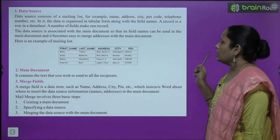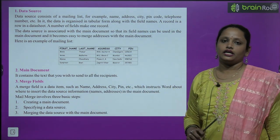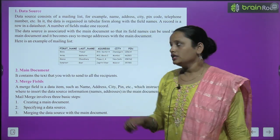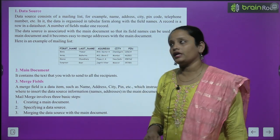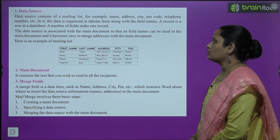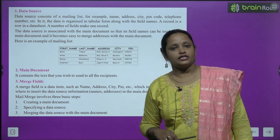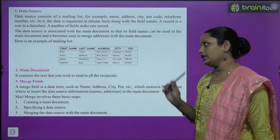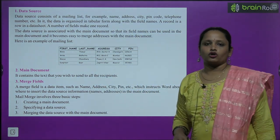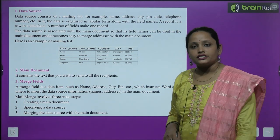A record is a row in a data sheet. The number of fields make one record. The data source is associated with the main document so that its field names can be used in the main document, making it easy to merge addresses with the main document.